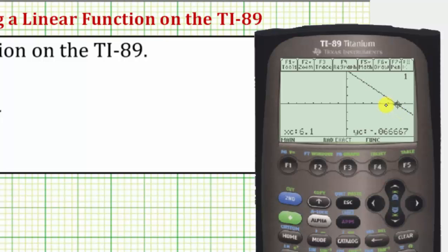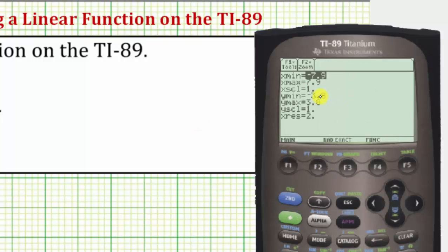If we did want to change the window manually, we would lose the zoom decimal setting. To adjust the window manually, we press diamond F2. Here's where we change the max and min along the horizontal or X axis, and max and min along the vertical or Y axis.